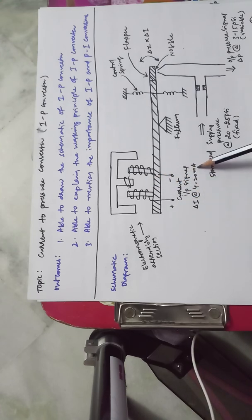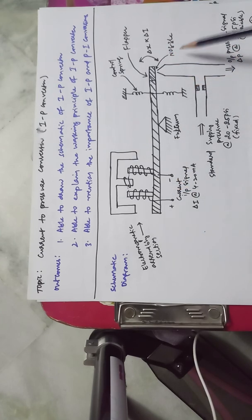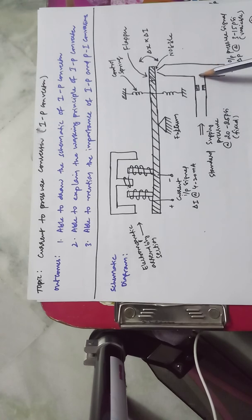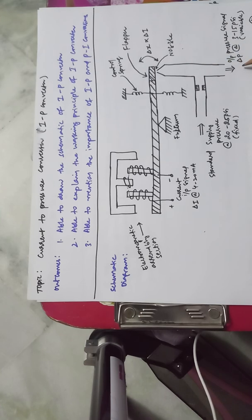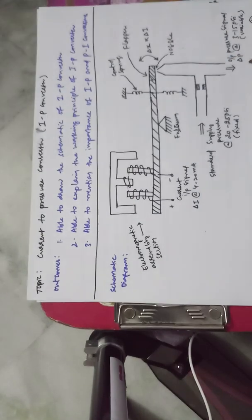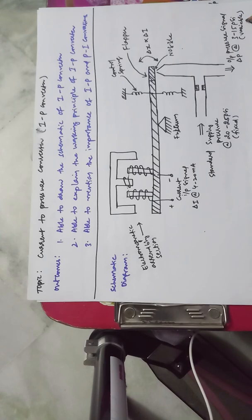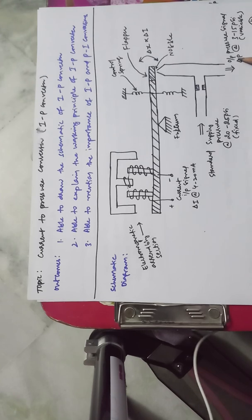The input signal to the electromagnetic assembly section is 4 to 20 milliamps, applied across the two input points. There is also a nozzle section and a back pressure section. One line is the supply pressure line with a standard supply pressure of 20 to 25 PSI fixed. The other line is the output response line where the output pressure signal of 3 to 15 PSI is obtained.